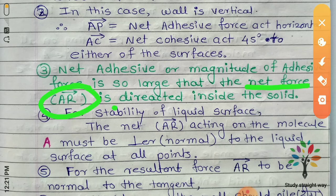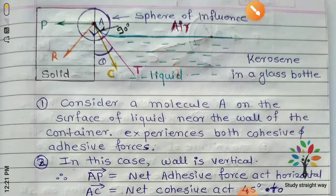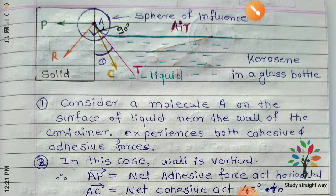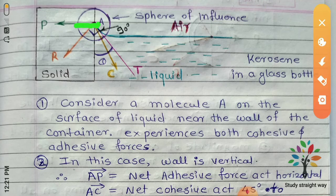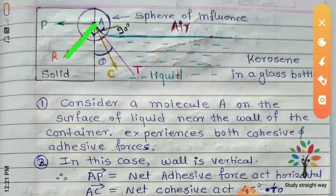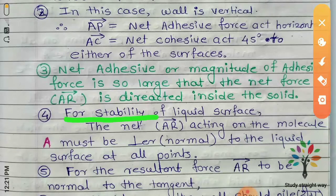The resultant AR is directed inside the solid. The surface experiences a constant force made by the molecules. The adhesive force is made by the resultant force AR. When AR is very large, the net force AR is directed inside the solid. AR is the net adhesive resultant force that acts inside the liquid.